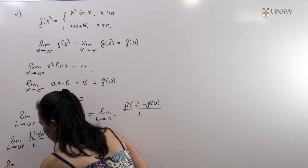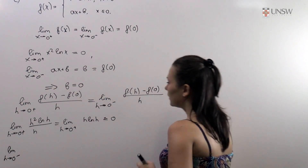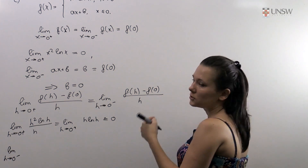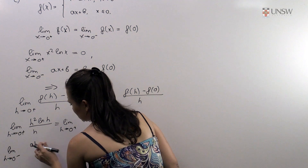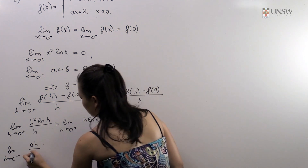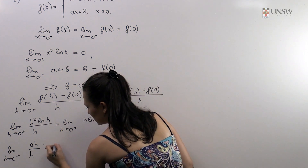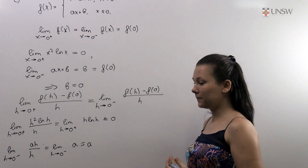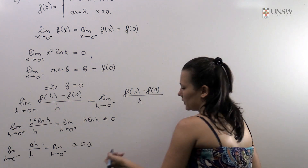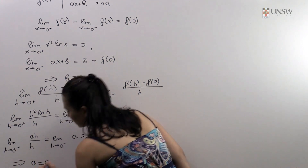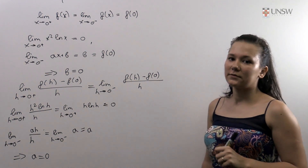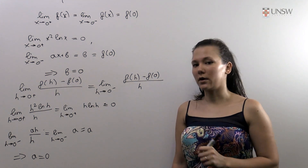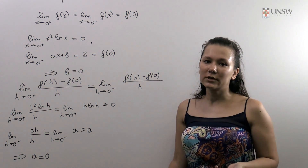Now the left-hand limit as h goes to zero of [f(h) − f(0)] / h. Since h is negative, f(h) = ah, and f(0) = 0, so this simplifies to the limit of a·h/h = a as h goes to zero from the left, which is just a. These two limits must be equal, so we conclude that a must equal zero. Therefore, our function is differentiable at x equals zero only when both a and b are equal to zero. Otherwise it is either not differentiable or not even continuous.